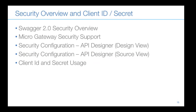Next, Dan Bott presented an overview of how security works on the Micro Gateway, focusing on client ID and client secret. He noted this will look familiar to those familiar with API management V4 or V5 — about 95% the same. Dan started with an overview of Swagger 2.0 security, how the Micro Gateway implements it, and how the API designer allows configuration in both design and source views.